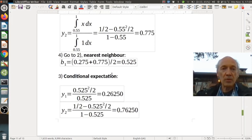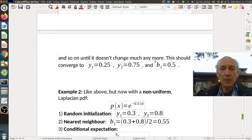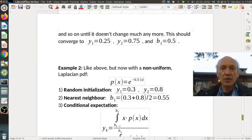Now we go back to the beginning, nearest neighbor, b_1 is now the midpoint between the two reconstruction values, is 0.525, and now the update of the y_k's with the conditional expectations. Here we get the updated values, and so on, and do it until it doesn't change much anymore. This should converge to y_1 equals 0.25, y_2 equals 0.75, and b_1 equals 0.5, and this is what we expected because we have a uniform distribution. All the quantization intervals are equally distributed and have each the same size.